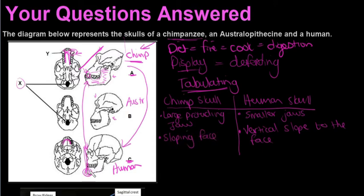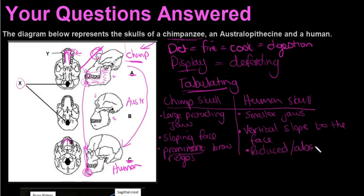Humans have a very big chin, whereas chimps don't. In chimps they have prominent brow ridges, which means they're very visible, and humans have reduced or absent brow ridges.